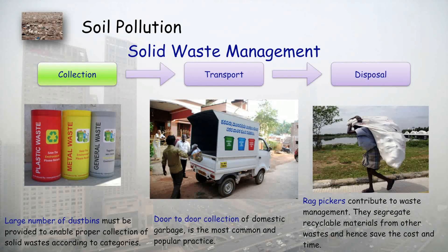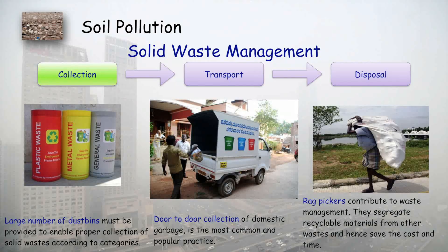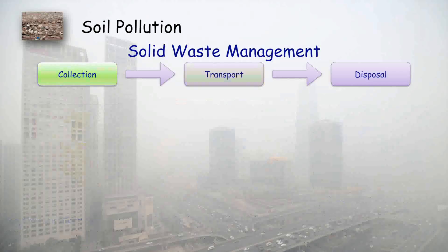In terms of collection, there are many ways of collecting solid waste. First is the use of a large number of dustbins — we must install a large number of dustbins all across the city. There are also door-to-door collection facilities, and finally there are rag pickers who collect usable material from dumping grounds.